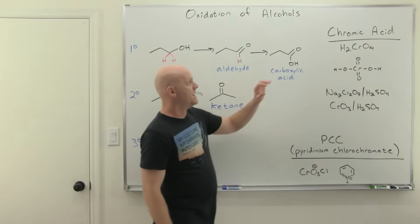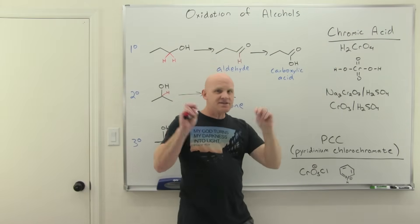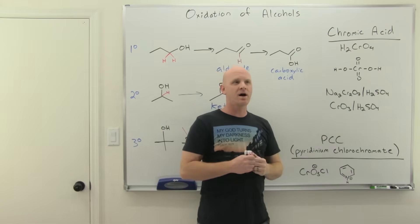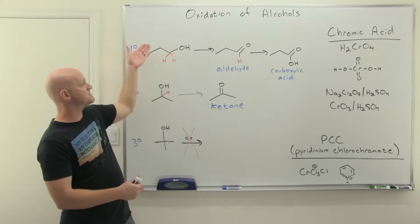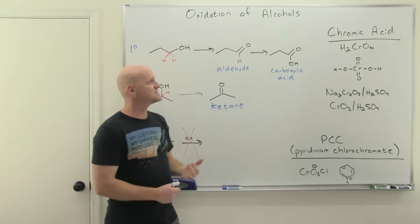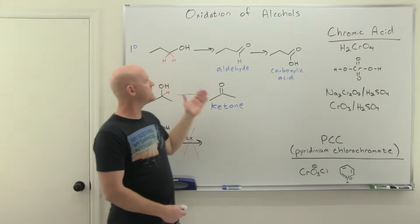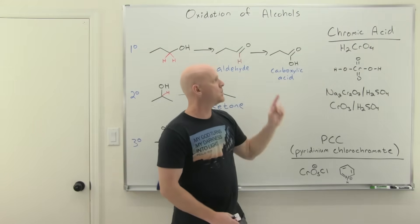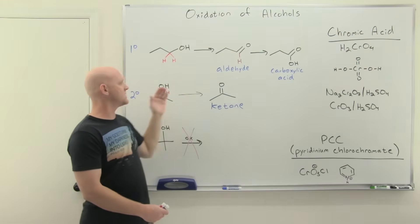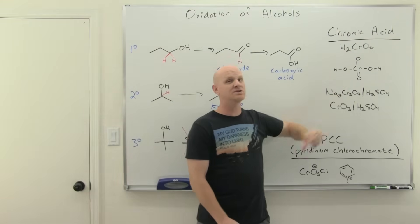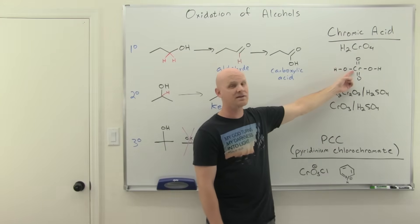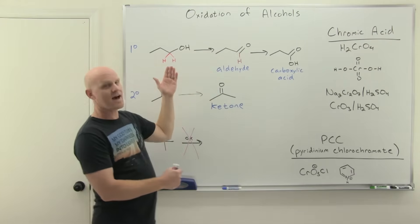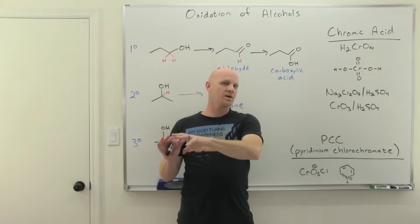A version of chromic acid often used for testing purposes is called the Jones reagent, and a version of PCC is called the Collins reagent, though that one's much less common. The Jones reagent reacts with primary alcohols, secondary alcohols, and aldehydes — this is sometimes called the chromic acid test. Chromic acid is orange in color, but when it oxidizes a primary or secondary alcohol, the chromic acid itself gets reduced, going from chromium(VI) to chromium(III), which is green. So a positive chromic acid test — indicating a primary alcohol, secondary alcohol, or aldehyde — is simply a color change from orange to green.